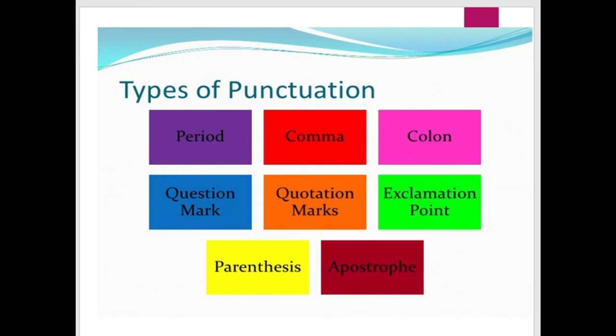Now, types of punctuation. There are more than 14 or 15 punctuation marks in English, but here we will discuss just a few: periods or full stop, comma, colon, question mark, quotation marks, exclamation points, parentheses, apostrophe, and semicolon.